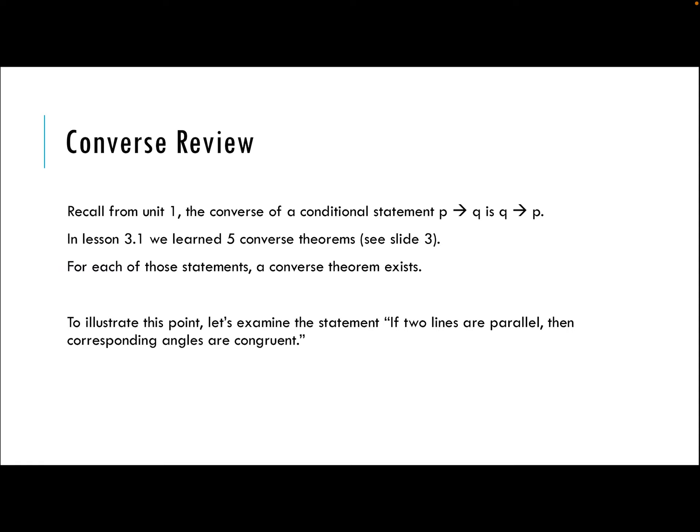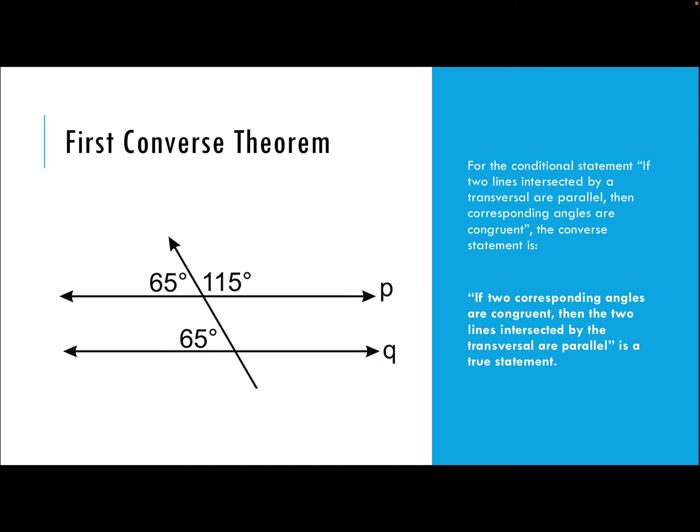This lesson is about using the converse theorem to prove that a pair of lines are parallel or maybe are not parallel. To illustrate this, we look at the statement: if two lines are parallel, then corresponding angles are congruent. The original conditional statement is: if two lines intersected by a transversal are parallel, then corresponding angles are congruent. The converse switches the hypothesis and conclusion: if two corresponding angles are congruent, then the two lines intersected by the transversal are parallel. That's a true statement.